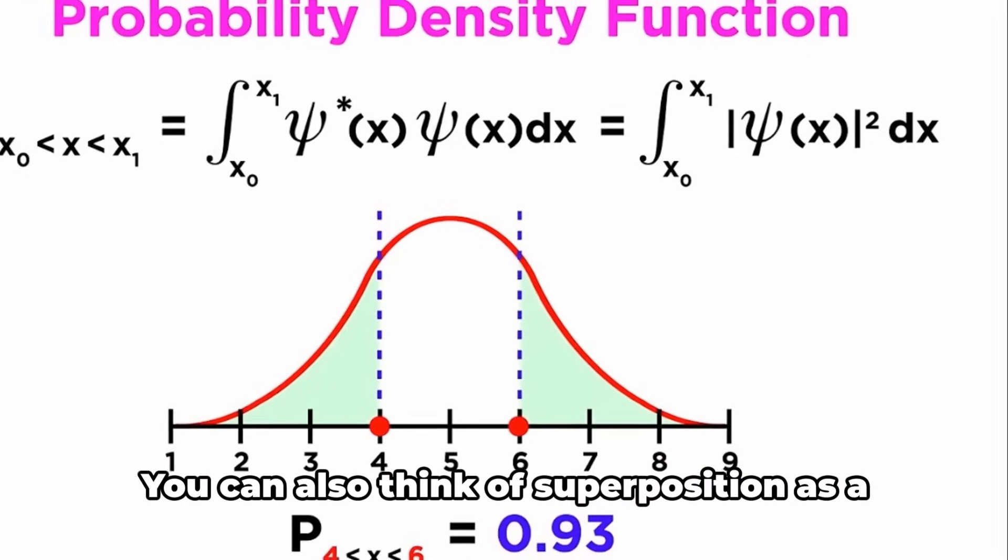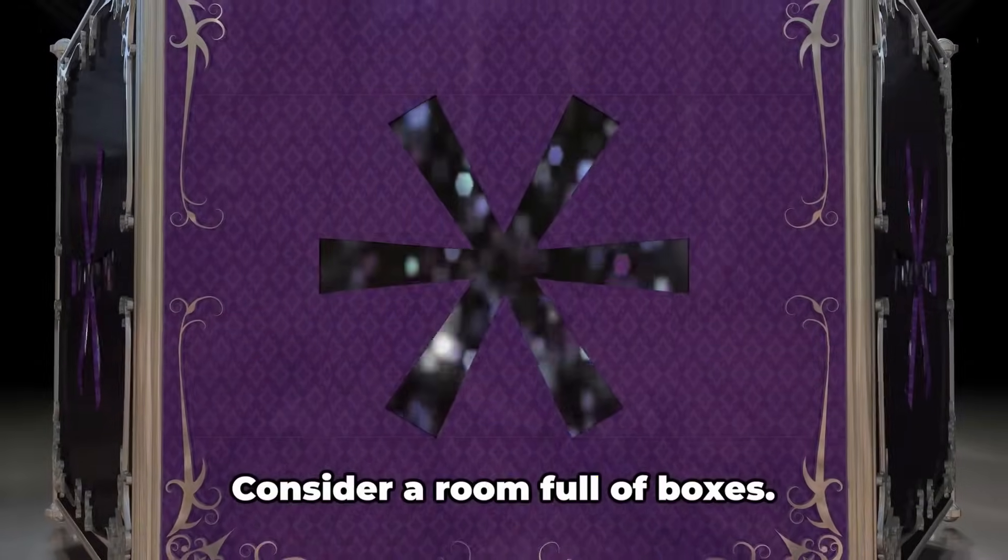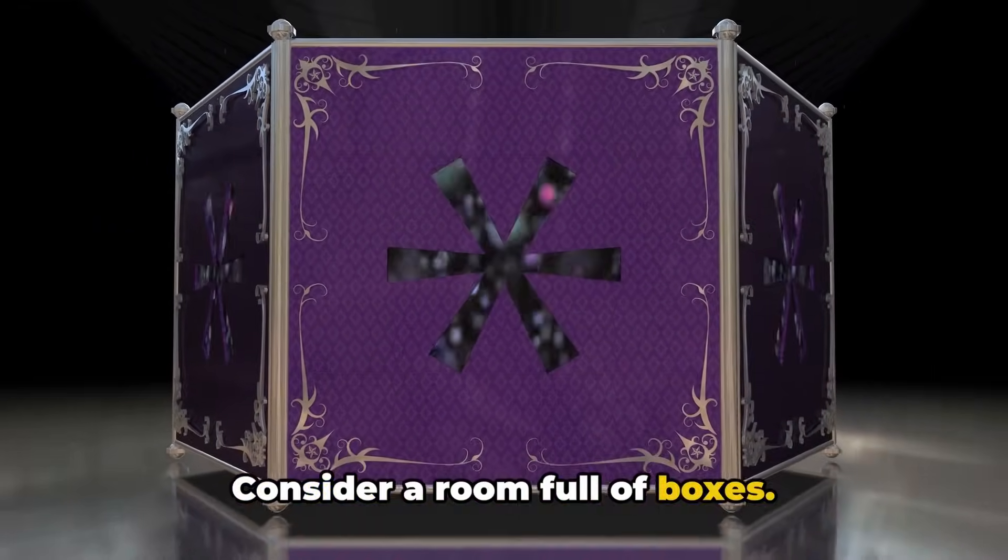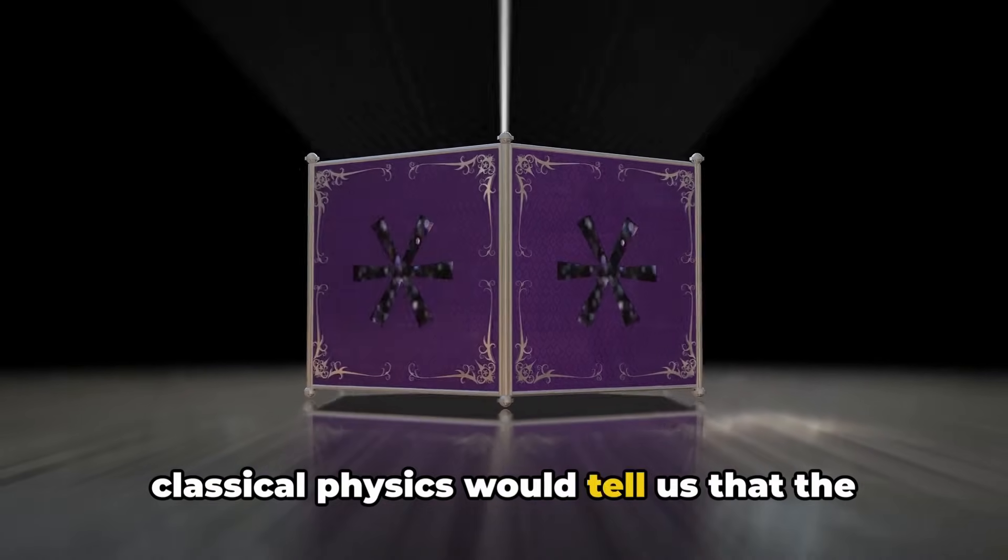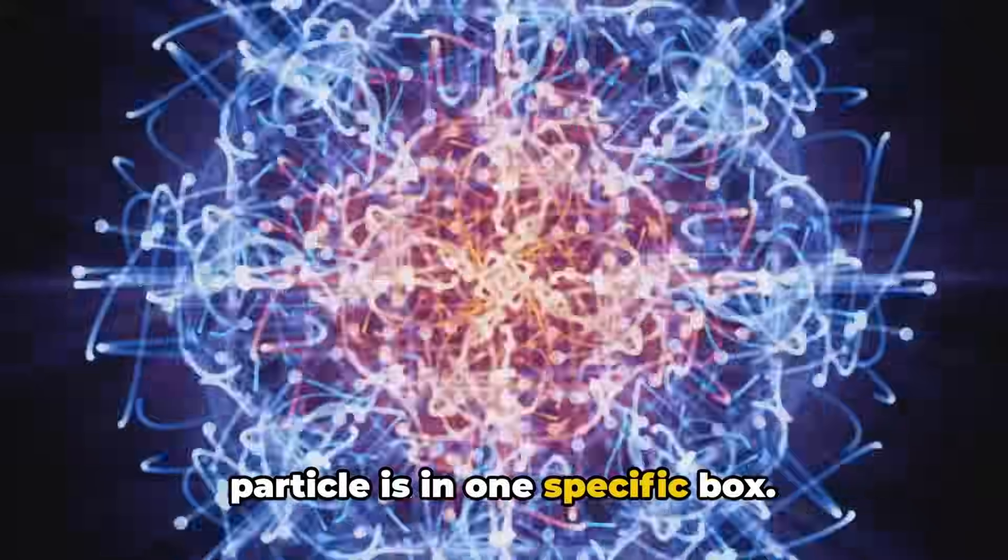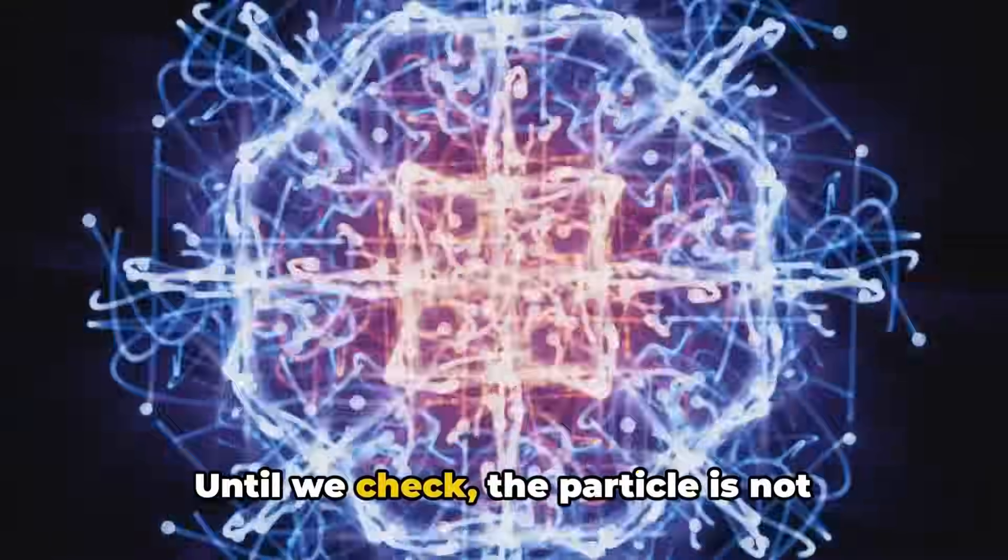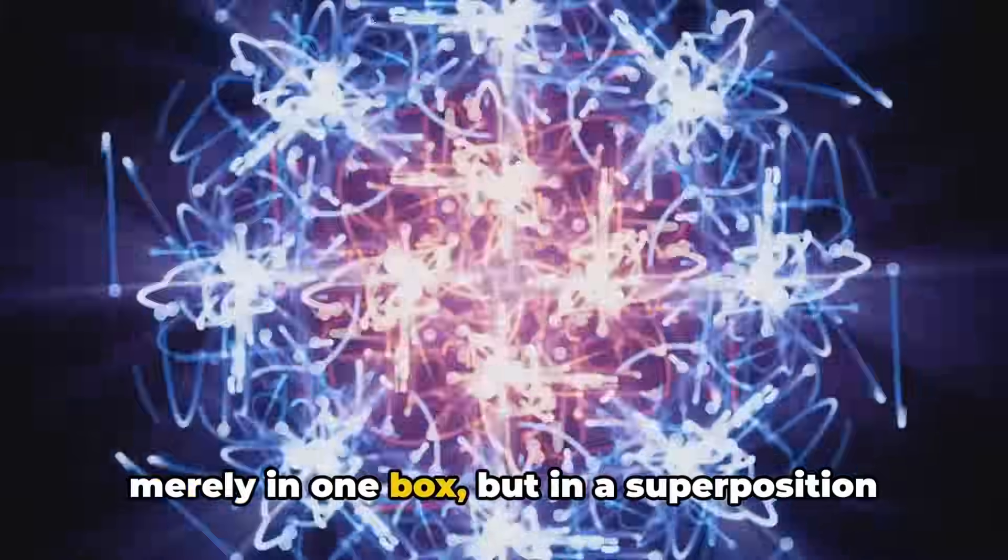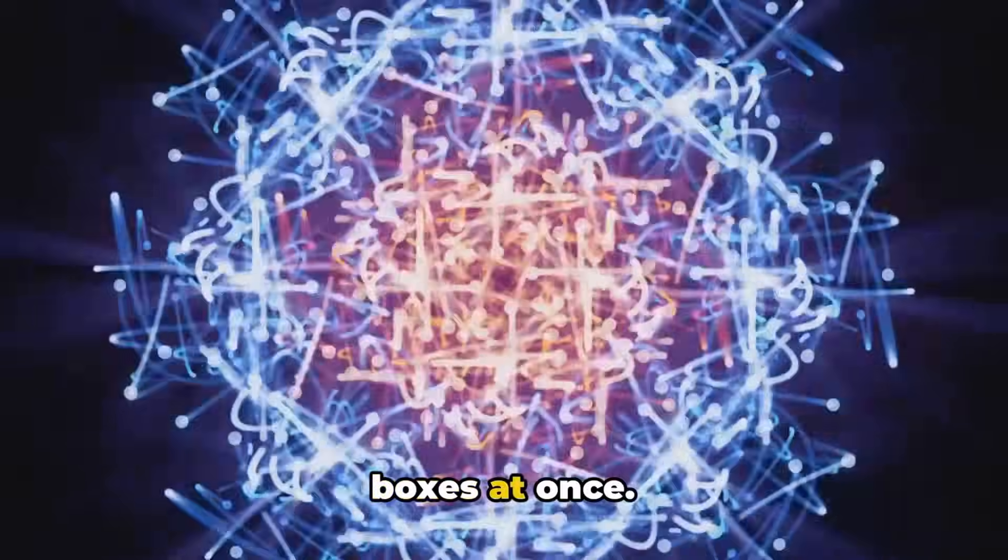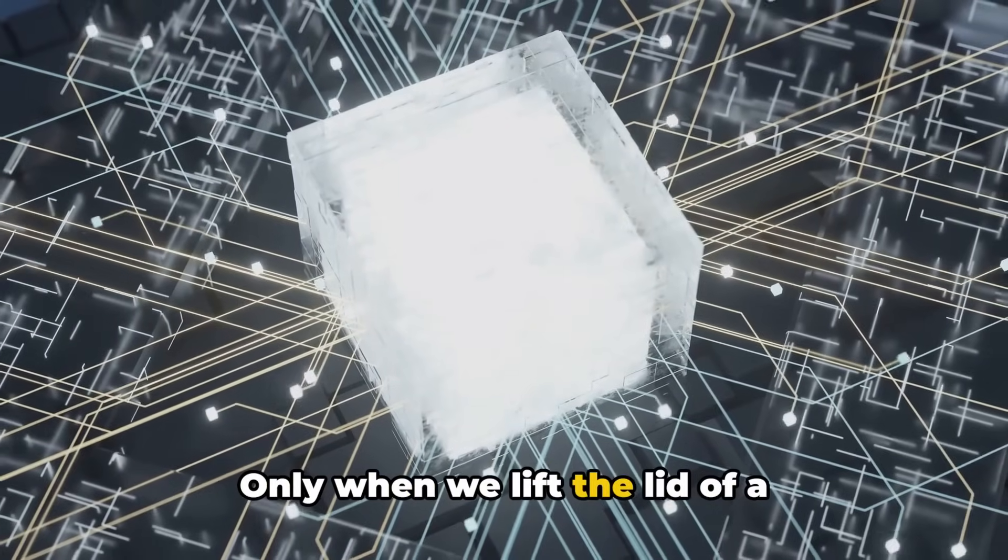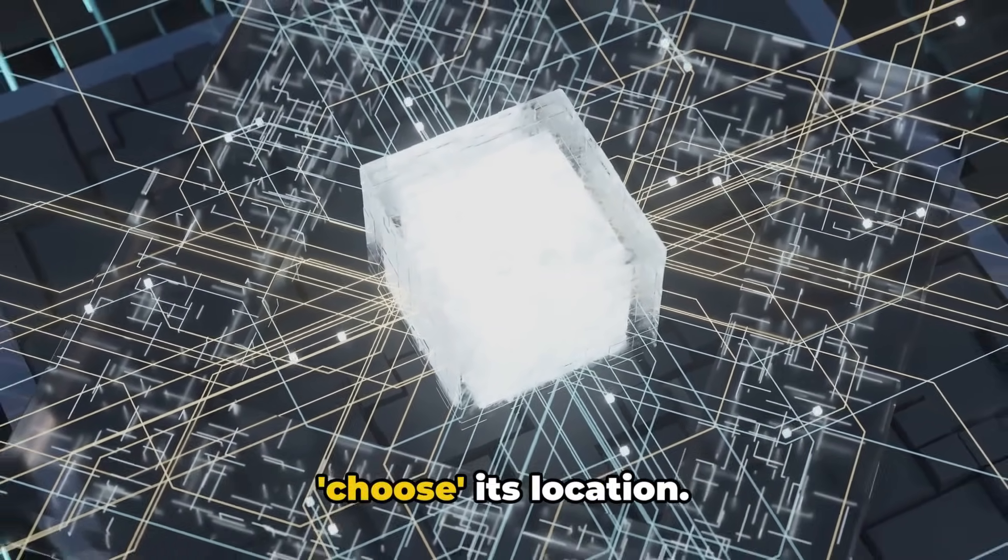You can also think of superposition as a game of hide and seek. Consider a room full of boxes. If a particle is hiding in the room, classical physics would tell us that the particle is in one specific box. But quantum mechanics tells us something different. Until we check, the particle is not merely in one box, but in a superposition of states. In a sense, it's in all the boxes at once. Only when we lift the lid of a box—observe or measure—does the particle choose its location.